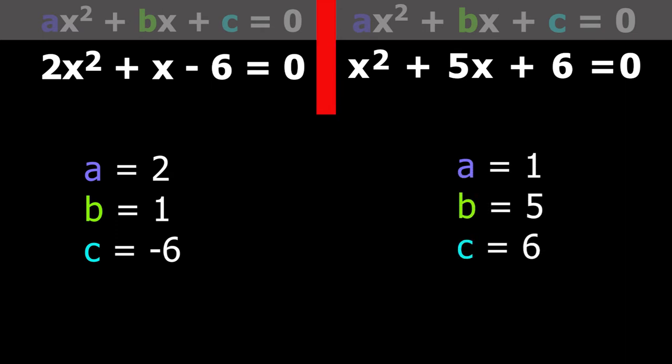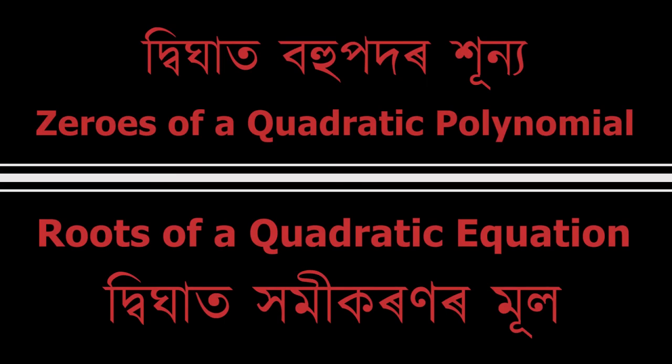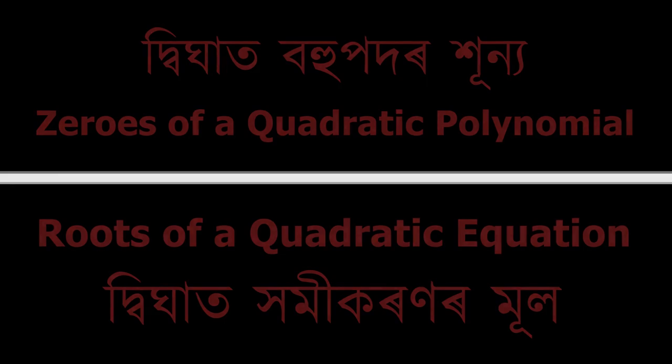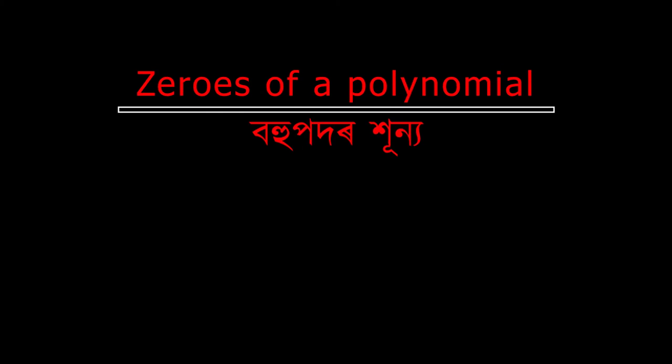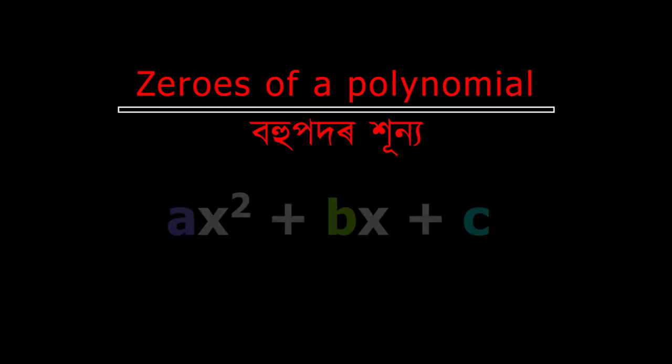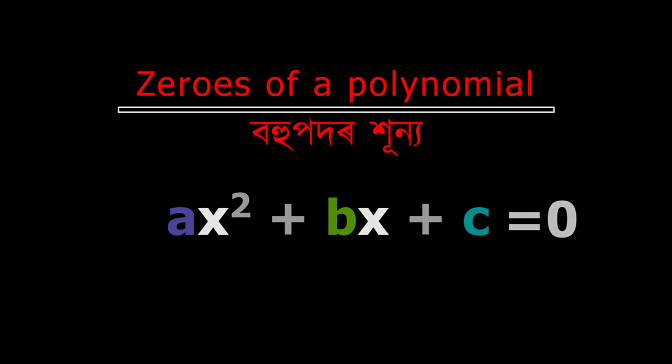Zeros of a polynomial and roots of a quadratic equation — you must know that zeros of a polynomial are nothing but the real values of the variable for which the value of the polynomial becomes 0.